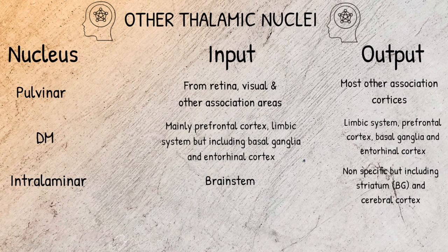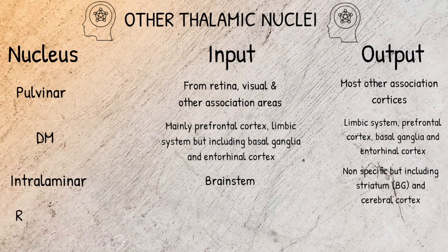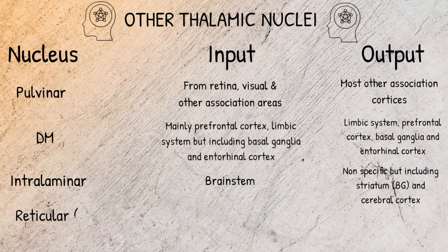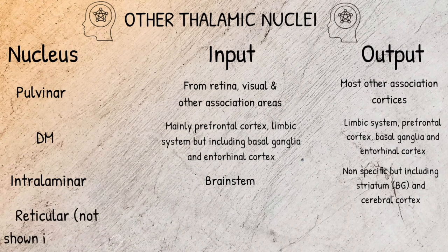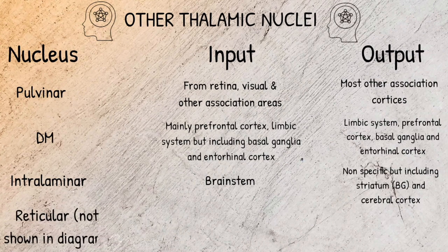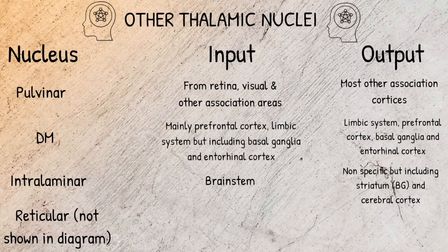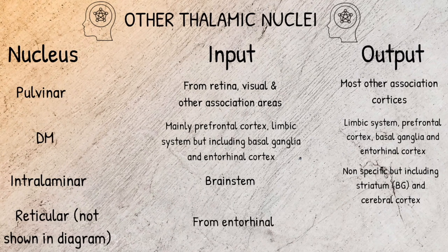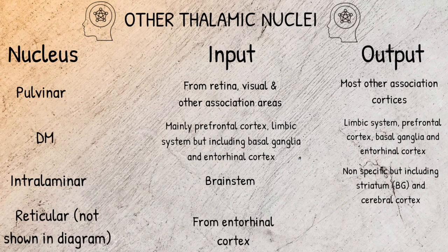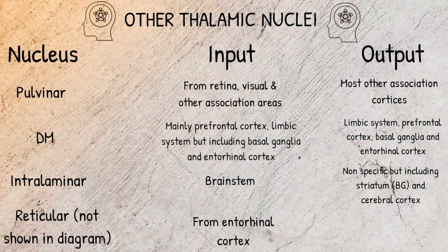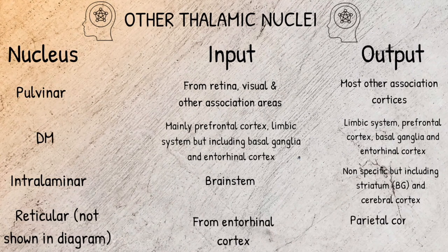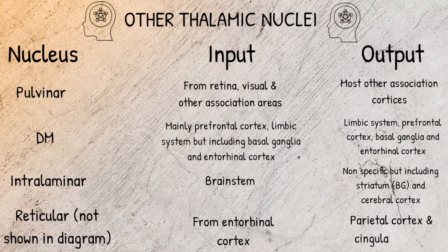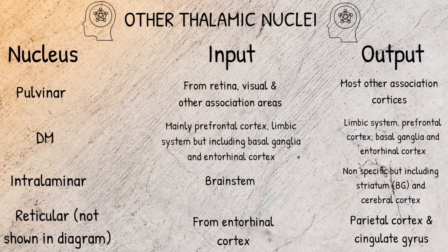Finally, we are going to address the reticular nucleus, which isn't shown on the diagram, but is present in the thalamus. This receives input from the entorhinal cortex, and sends stimuli to the parietal cortex and cingulate gyrus.